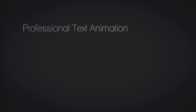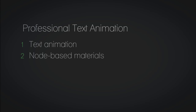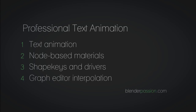Hello and welcome to this video tutorial. This is Marc LeVar at BlenderPassion.com and I will be showing you how to create this professional text animation using Blender. Some of the topics we will cover include text animation. We will also create node based materials and animate them to get the desired fade in effect. For some of the more complex animations we will be using shape keys and drivers to gain better control over the animation. And finally we will be covering basic graph editor interpolations to polish the effect. And on that note let's get started.